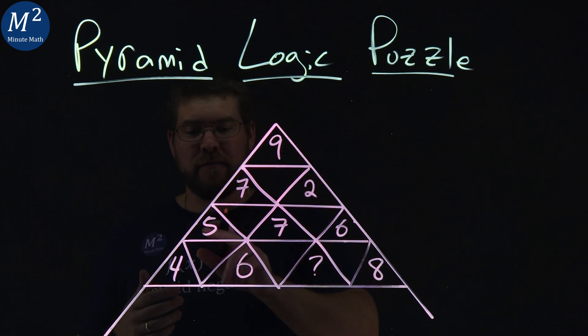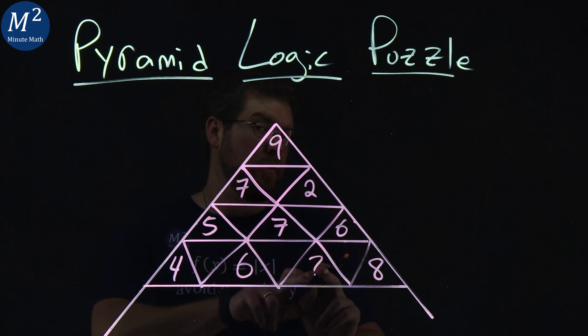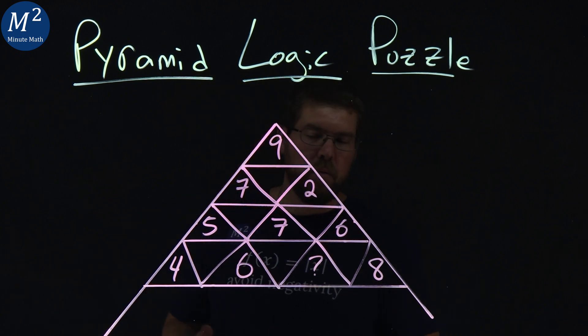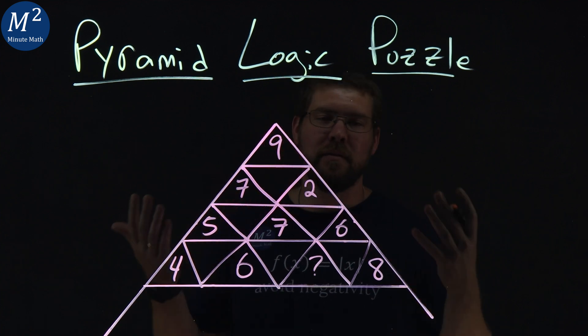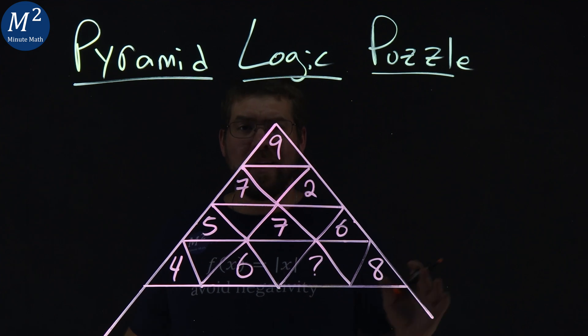We have a 9, 7, 5, 4, 2, 7, 6, 6, question mark—don't know what that is—and an 8. With just this measly amount of information, can we determine what that missing triangle value is?